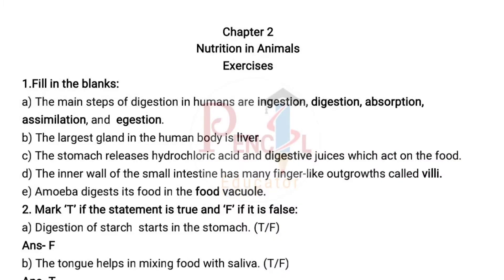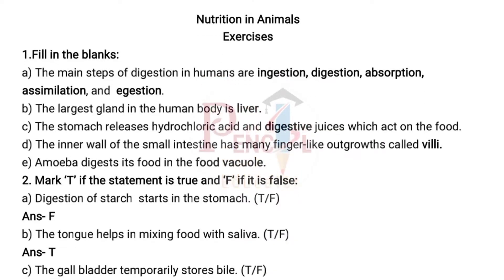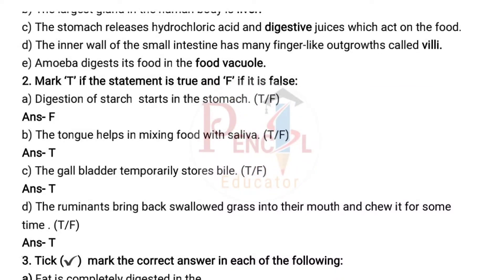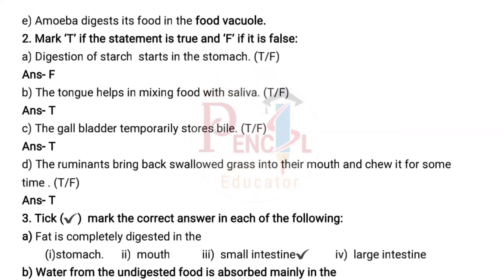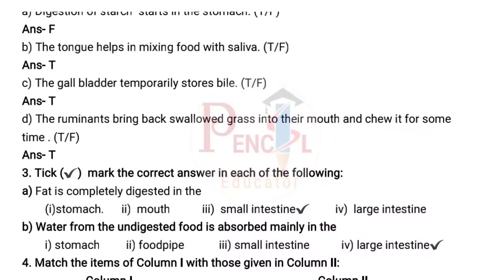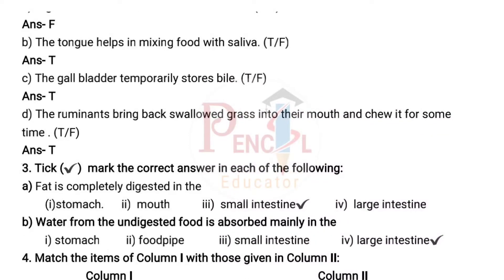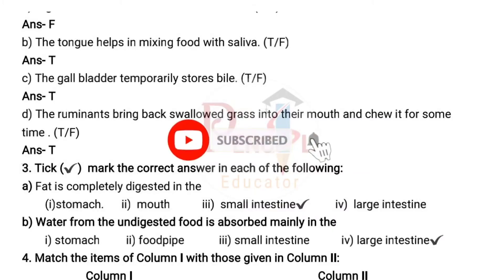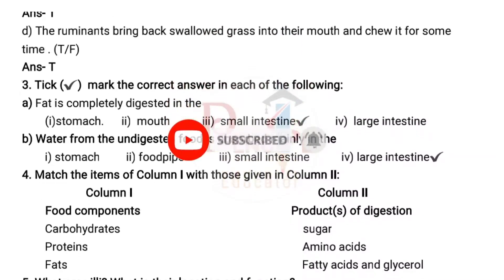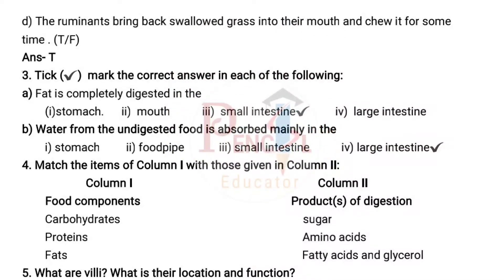Second main: Mark T if the statement is true and F if it is false. A) Digestion starts in the stomach — answer: F. B) The tongue helps in mixing food with saliva — answer: T. C) The gall bladder temporarily stores bile — answer: T. D) The ruminants bring back swallowed grass into their mouth and chew it for some time — answer: T.